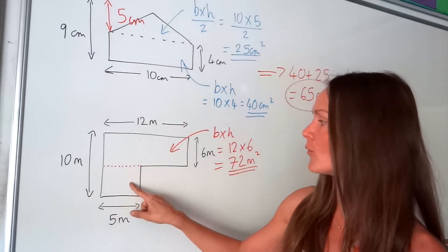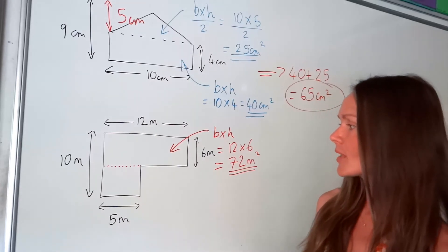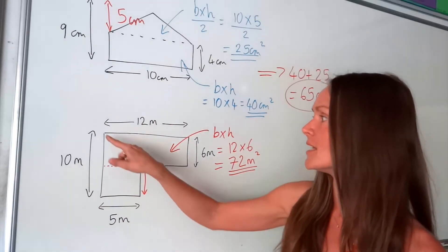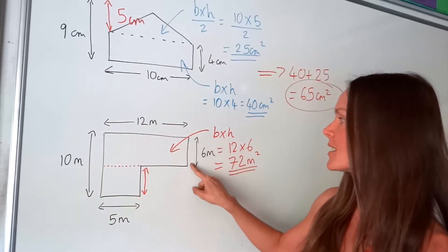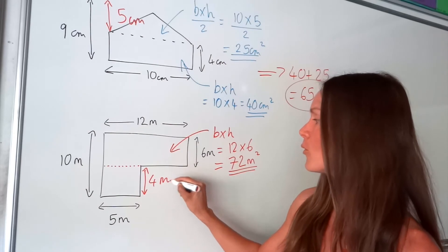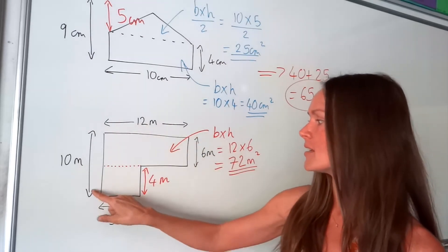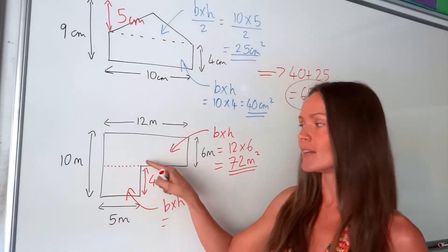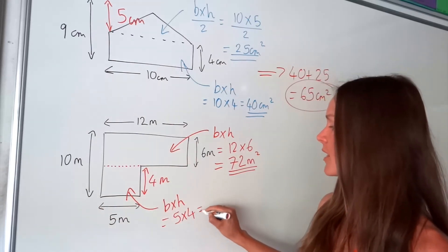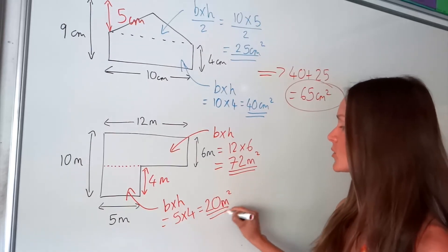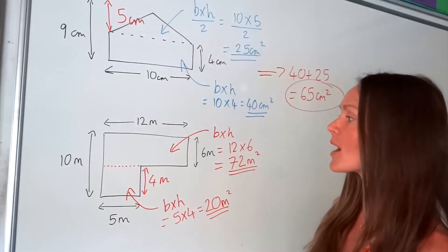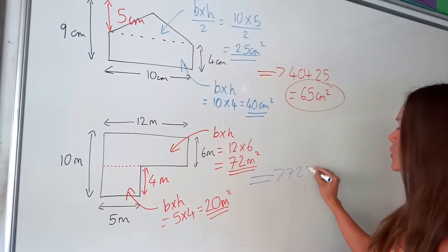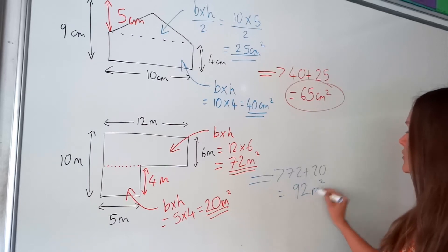Now we need to work out the area of this rectangle down here. I know the base, but I haven't been given the height. But I can calculate it fairly easily because the total height is 10 and this one is 6, which means this one must be 4 metres, because 4 plus 6 gives me 10. So the base is 5 and the height is 4. 5 times 4 is 20 metres squared. So just like before, remember to add those areas together — 72 plus 20 gives 92 metres squared.